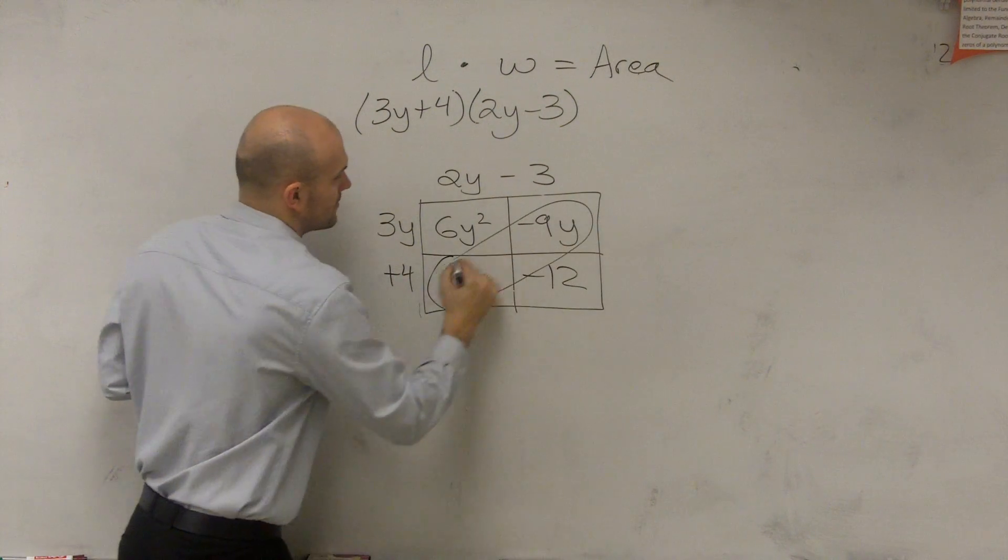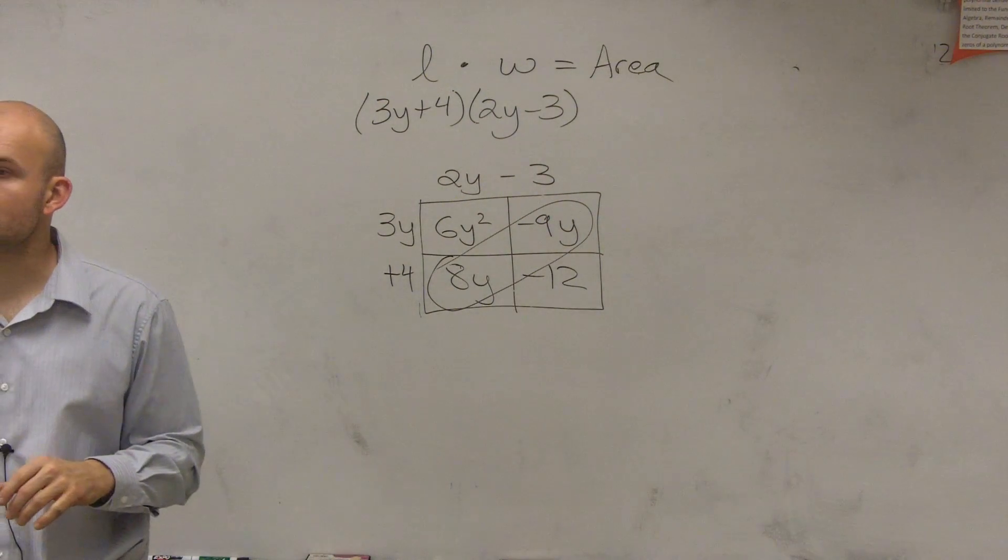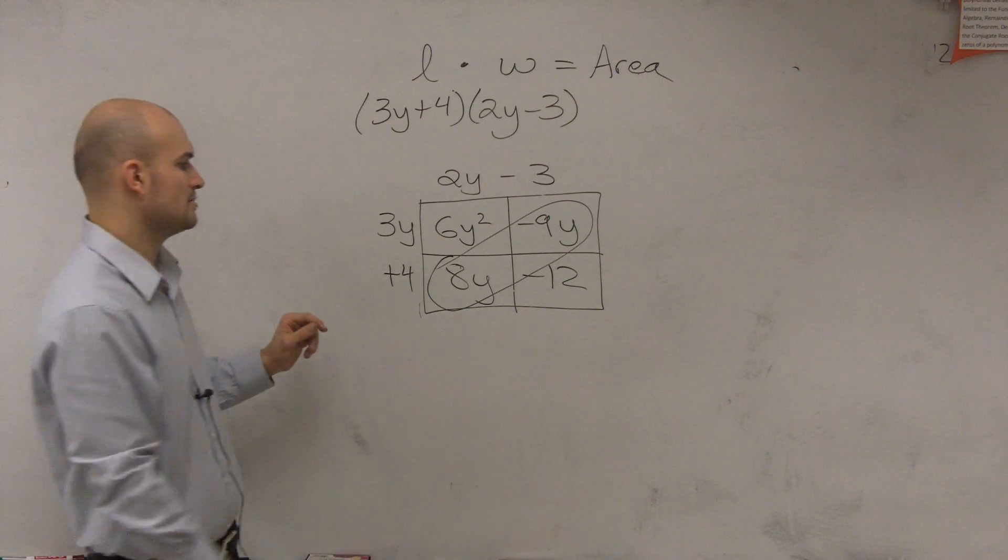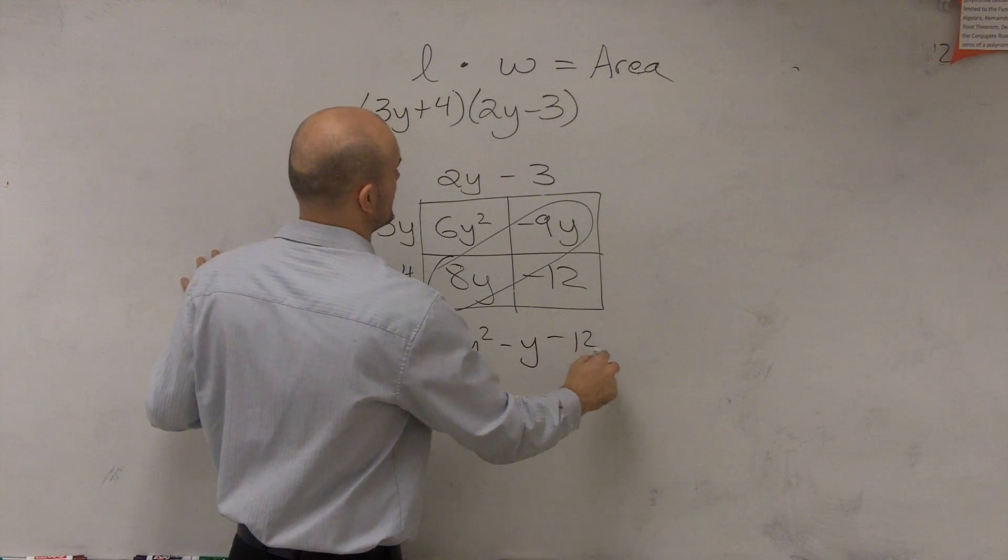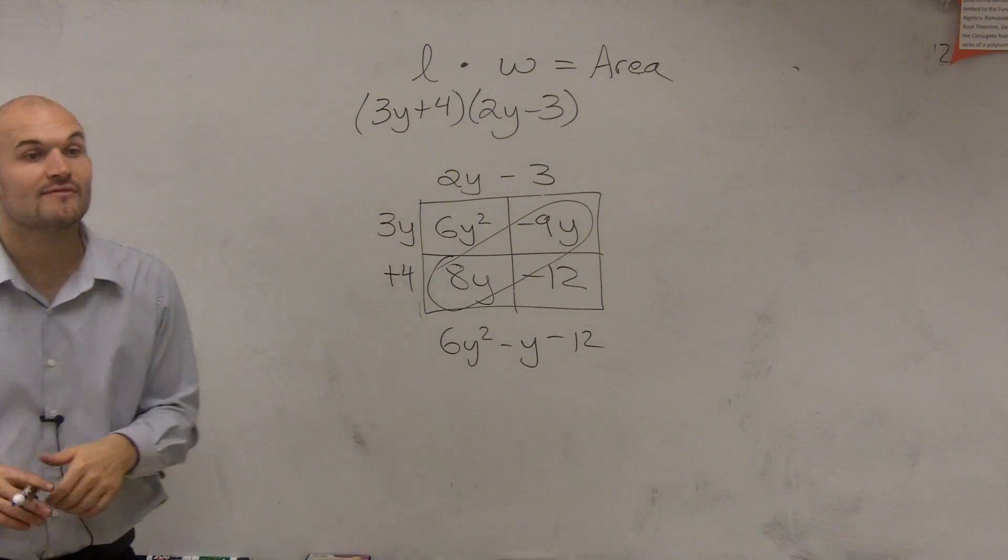Now, you notice that we have like terms, so we can combine those like terms. Therefore, I'm left with 6y squared minus y minus 12, which would be my final answer.